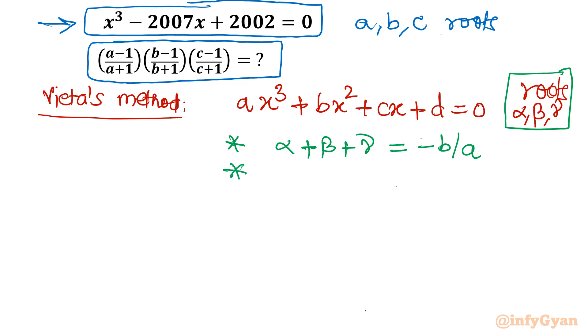Second equation: sum of roots taken two at a time. Alpha beta, beta gamma, gamma alpha. That is equal to coefficient of x over coefficient of x³, so that would be c over a.